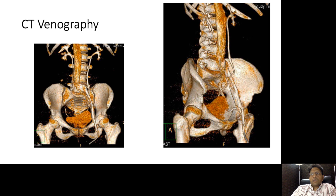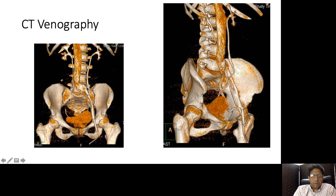Moving on to CT venography — this is a 3D reconstruction to make it easier to appreciate. The IVC is intact, the left common iliac vein and external iliac are visible, but the problem is very evident on the right side: the entire right common iliac, external iliac, and internal iliac vein is obstructed and is probably completely thrombosed. This is where CT venography comes into being useful.